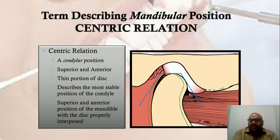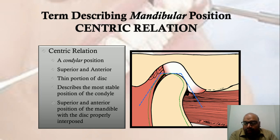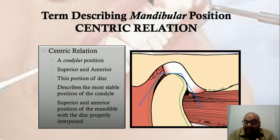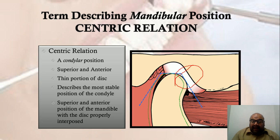Centric relation is a condyle-related position — irrespective of whether teeth are in contact, not in contact, or even present. It is purely a condylar position: the relationship of the condyles within the condyle-disc assembly. In centric relation, the condylar process rests in the intermediate-most portion of the articular disc, which is also one of the thinnest portions. This describes the most stable position of the condyle — the anterior-superior-most position.